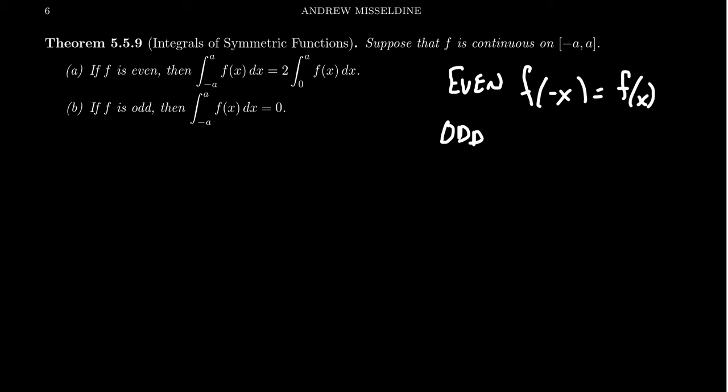Odd functions are similar here. They have the property that if you take f of negative x, this equals negative f of x. So geometrically speaking, a function is odd if a reflection across the y-axis is equivalent to a reflection across the x-axis. That's equivalent to saying that if you rotate around the origin 180 degrees, you get the exact same picture.